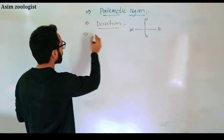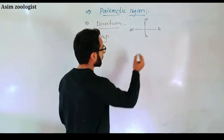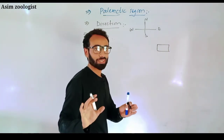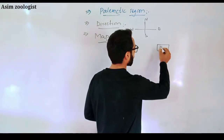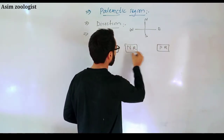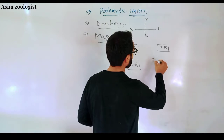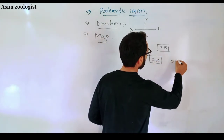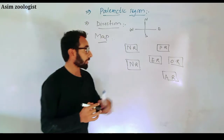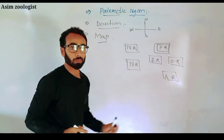The second step is the map. You have to draw the map of that particular region. For example, this is the Palearctic region, this is the Neotropical region, this is the Ethiopian region, this is the Oriental region, and this is the Australian region. You have to draw the map and highlight that particular region.